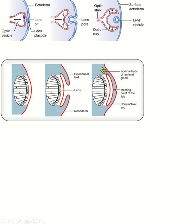Development of the conjunctival sac. This is the optic vesicle and optic cup, which develops into the retina. After the formation of the optic vesicle, the lens placode forms the lens vesicle, which arises from the surface ectoderm. The lens vesicle then detaches from the surface ectoderm. At the 6th week of development, there is formation of small grooves or depressions in the surface ectoderm above and below the developing eye.